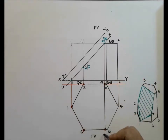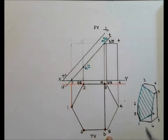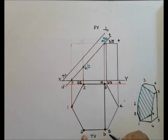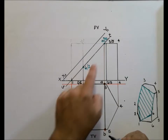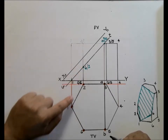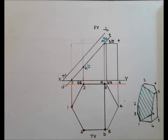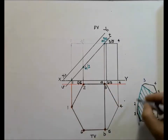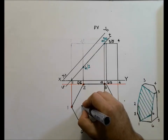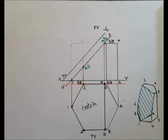The cut surface runs from A to B — not from three to five, because three and five remain unaffected. Then from B down to six, from six down to one, and from one back around the back end to two, then two back to A. Remember to use a 45-degree set square to hatch this area at equal intervals — this is the hatch or cross-section.